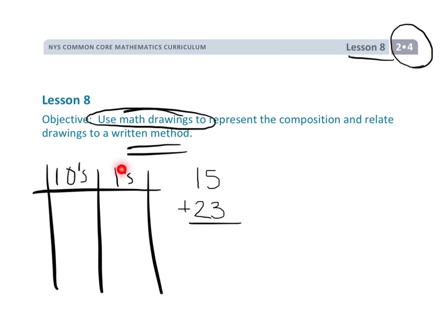Students would have this big piece of paper with a place value chart printed on it, and a pile of pennies. They'd place one penny in the tens column and five pennies in the ones column to represent 15, then two pennies and three pennies to model 23. In this case there's no regrouping needed, so the answer is 38.